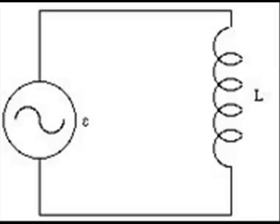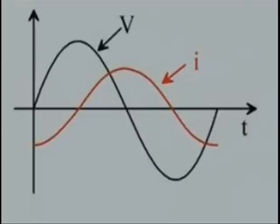Now, if the load is purely inductive instead of resistive, the current lags behind the source voltage by 90 degrees. It is shown here in this figure. The black waveform here also represents the voltage and the red waveform represents the current.